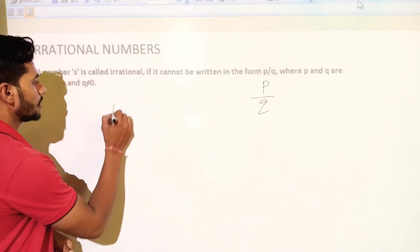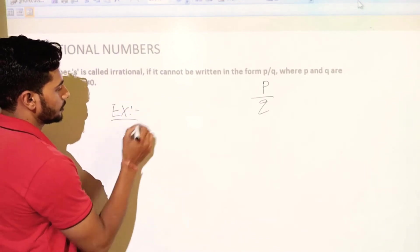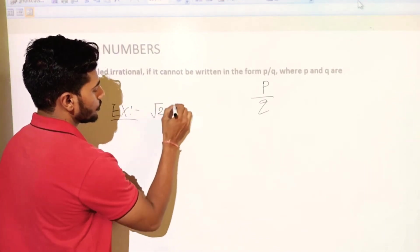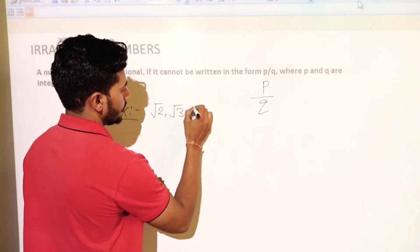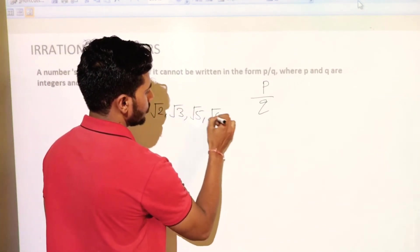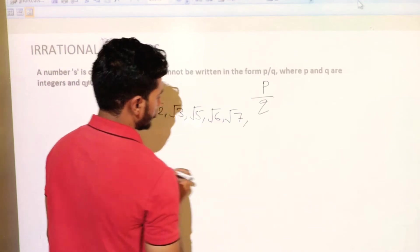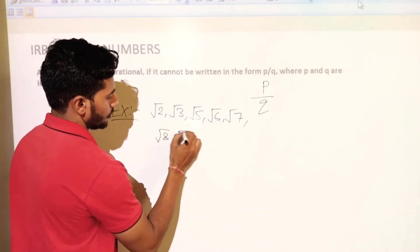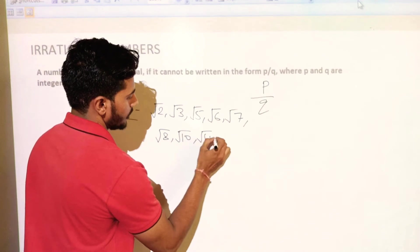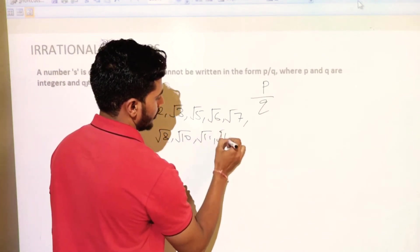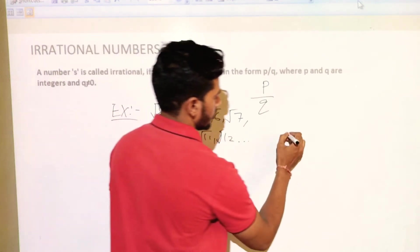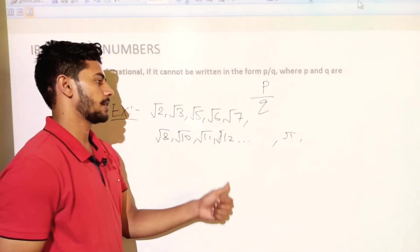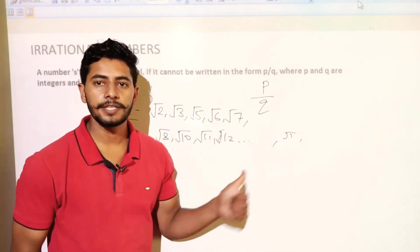For example, root 2, root 3, root 5, root 6, root 7, root 8, root 10, root 11, root 12, pi, etc. are irrational numbers.